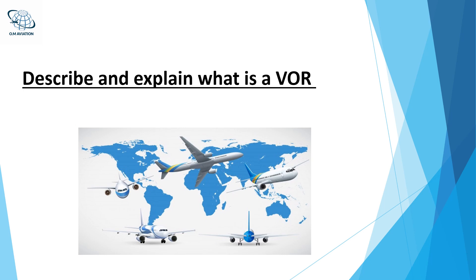A VOR station transmits 360 radio signals called radials. In the airplane, there is a receiver that knows how to receive the signal, and according to the calibration of the device by the pilot, a certain radial is selected. On the device, a needle called CDI can show a deviation from the radial up to 10 degrees on each side.